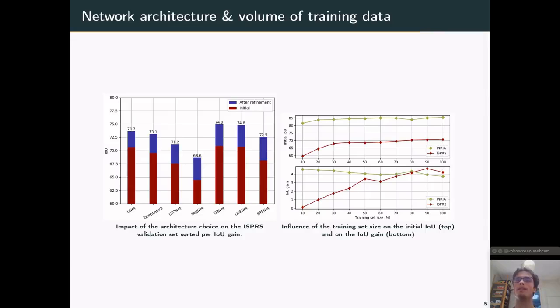However, this plateau is different for the two datasets. Indeed, for the INRIA dataset, it is already stabilized with only 10% of the annotations, while the plateau is reached for more than 50% of the initial training database for the ISPRS dataset. This stems from the fact that the two datasets have an initial size very different. Indeed, the INRIA dataset is much bigger than the ISPRS dataset.